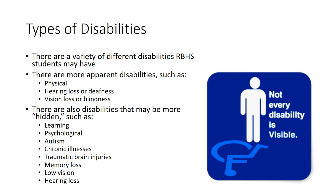Other physical disabilities are due to diseases, degeneration, or disorder of the nervous system. This includes impairments such as cerebral palsy, spina bifida, multiple sclerosis, paraplegia, quadriplegia, and poliomyelitis.